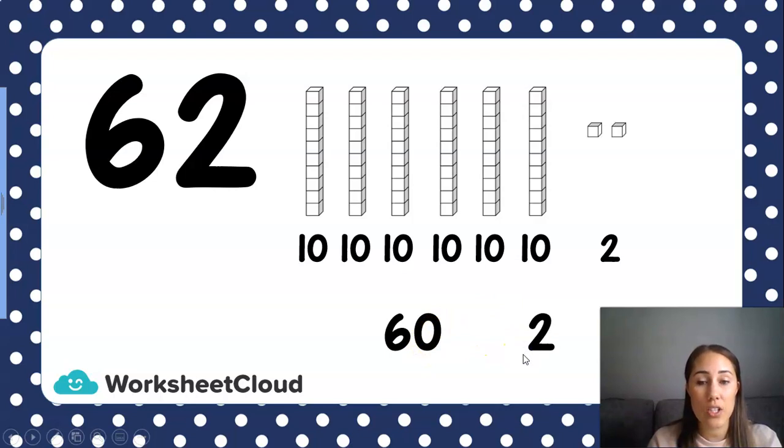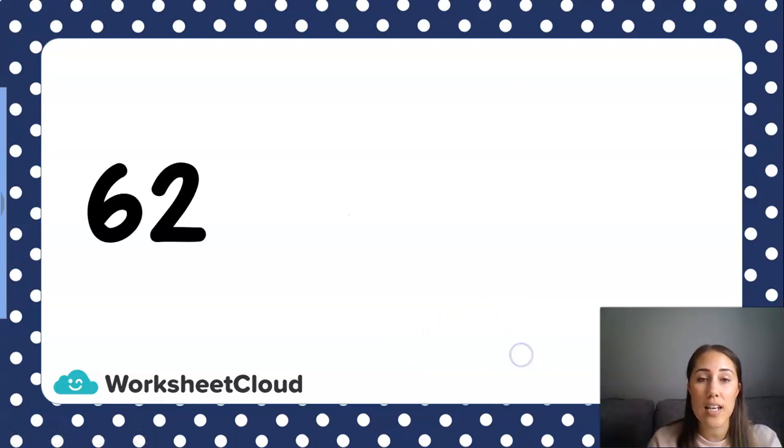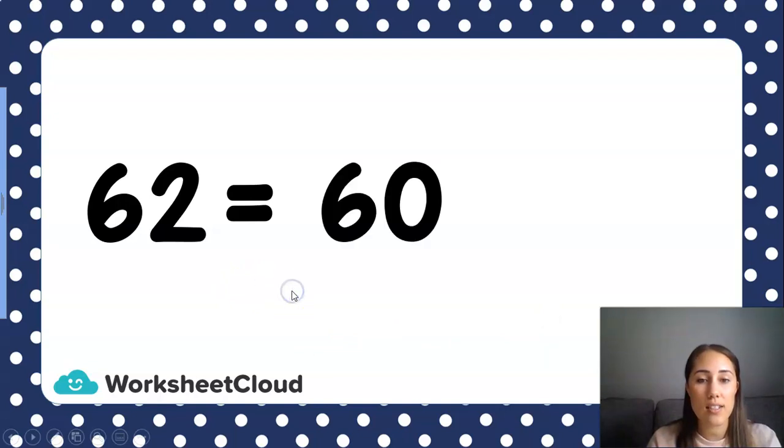And 60 and a 2 gives me 62. So let's rename 62. Remember rename, I'm going to break that number up into its tens and into its units. And my units are my loose blocks, the ones. So 62 is equal to 60 plus a 2.